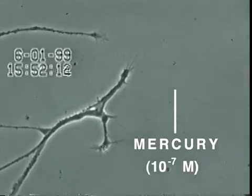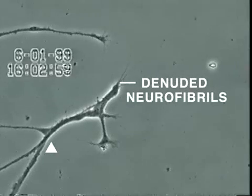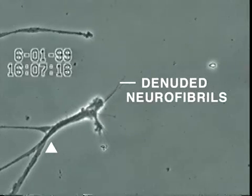Over the next 30 minutes, the neurite membrane underwent rapid degeneration, leaving behind the denuded neurofibrils seen here.